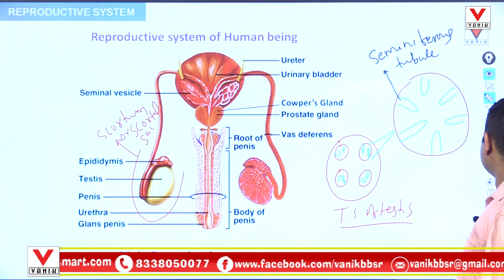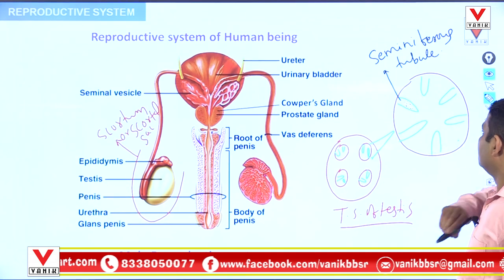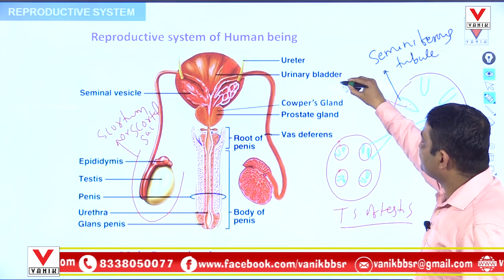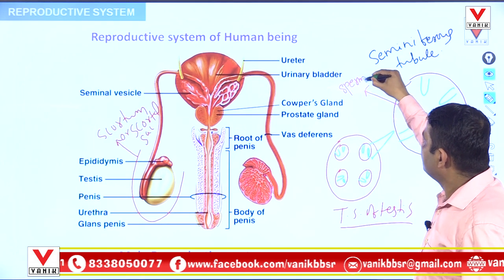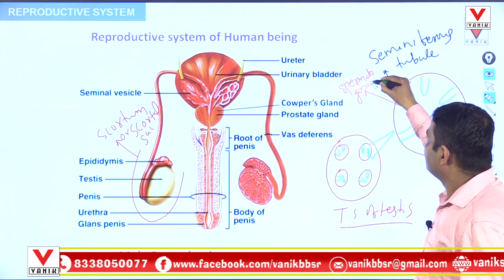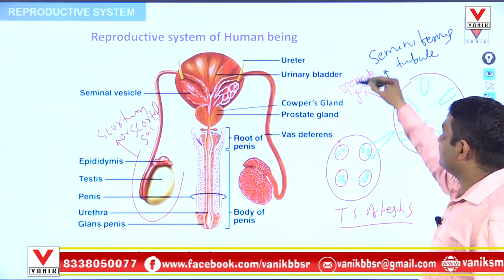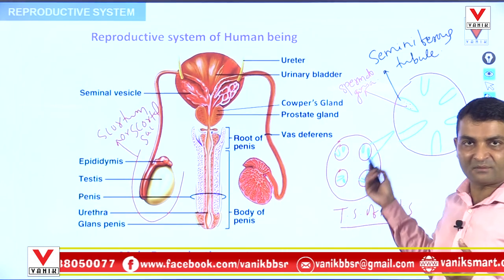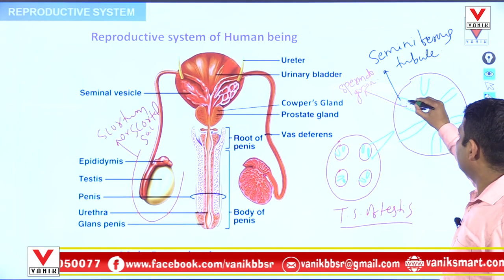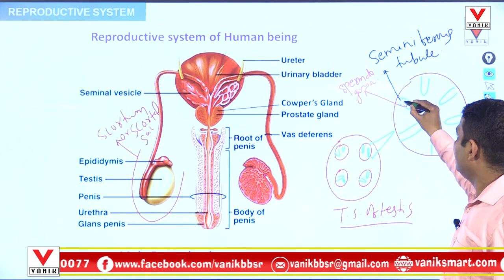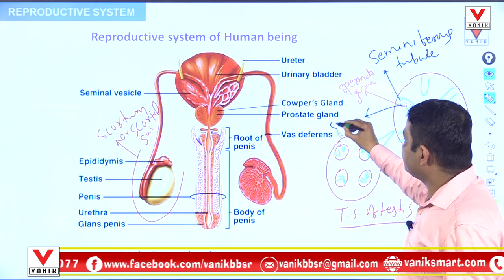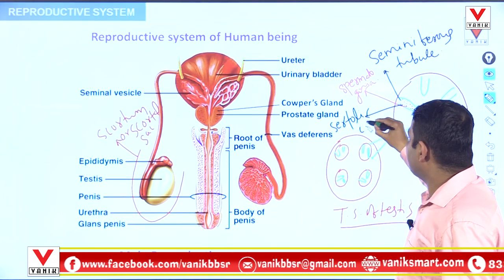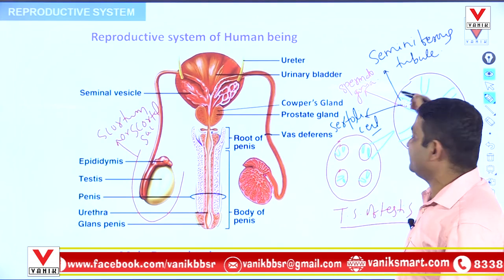Inside the seminiferous tube there is a cell called germinal epithelial cell or spermatogonia. That spermatogonia undergoes spermatogenesis to form sperms. Another type of cell is also present inside the seminiferous tube — that is called Sertoli cell. This Sertoli cell provides nourishment to the developing sperm.